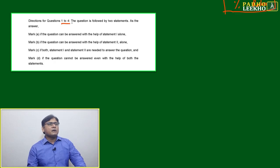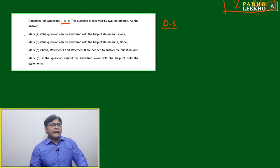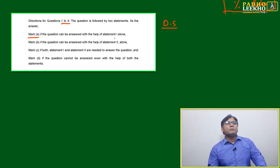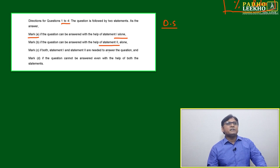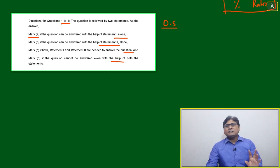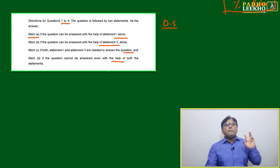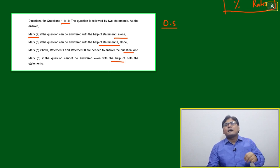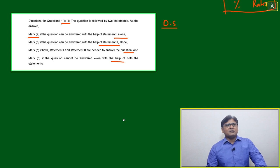For practice questions 1 to 4, which are related to data sufficiency, the instructions are: mark A if the question can be answered with Statement 1 alone; mark B if it can be answered with Statement 2 alone; mark C if both statements together are needed; and mark D if the question cannot be answered even with both statements combined.